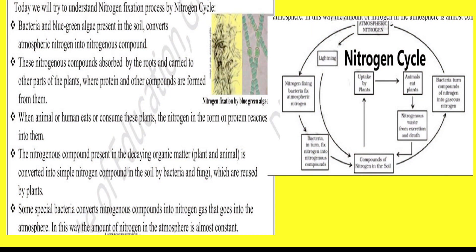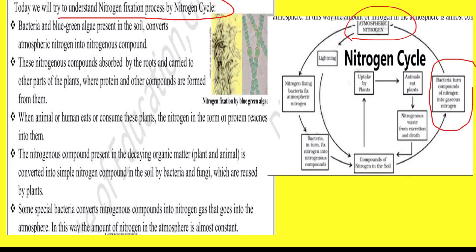Ab nitrogen chakkar ki baat karte hain — today we'll try to understand the nitrogen fixation process through the nitrogen cycle. Aap dhek sakte hain ki jo vatavaran ki nitrogen hai, sabse pehle usko bacteria jameen ke andar compounds mein change kar dete hain. Yeh jo compounds hain, inhe podhon ne avshoshit kar liya.